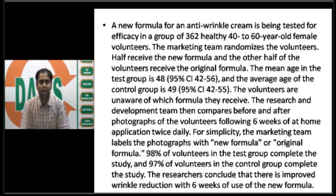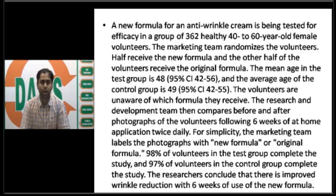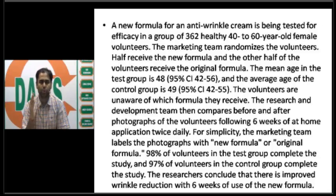A new formula for an anti-wrinkle cream is being tested for efficacy in a group of 362 healthy 40 to 60 year old female volunteers. The marketing team randomizes the volunteers: half receive the new formula and the other half receive the original formula. The mean age of the test group is 48, with a 95% confidence interval ranging from 42 to 56, and the average age of the control group is 49, with a 95% confidence interval of 42 to 55.